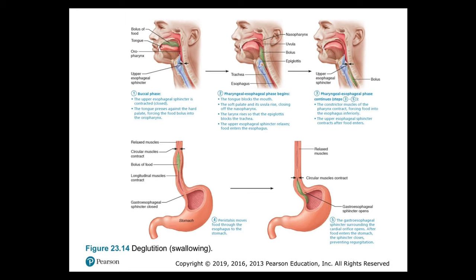For a typical bolus, the entire trip takes about nine seconds to complete. Liquids may make the journey in a few seconds, arriving ahead of peristaltic contractions with the assistance of gravity. A dry or poorly lubricated bolus travels much more slowly — in fact, it is almost impossible to swallow an entire slice of processed white bread without taking a drink, because friction with the esophagus walls makes peristalsis ineffective.